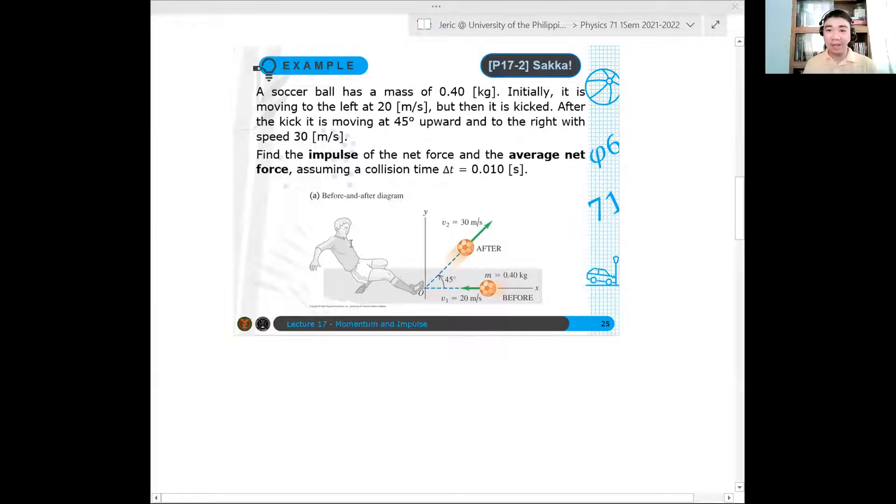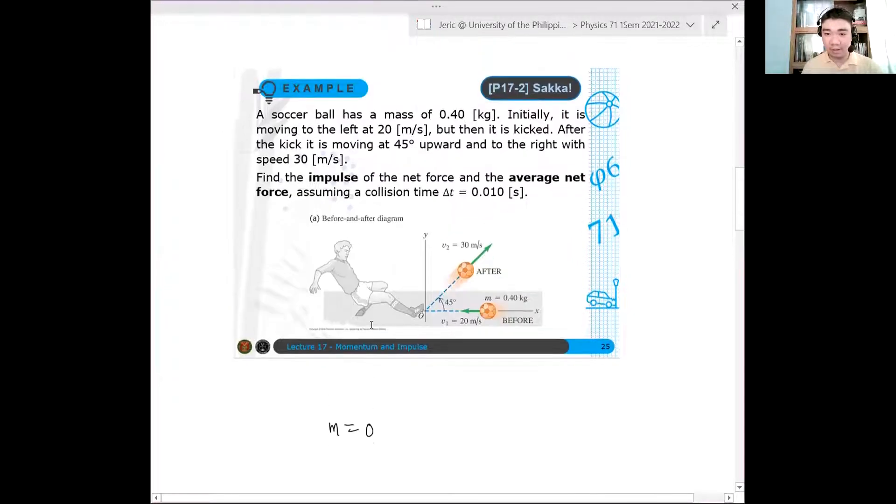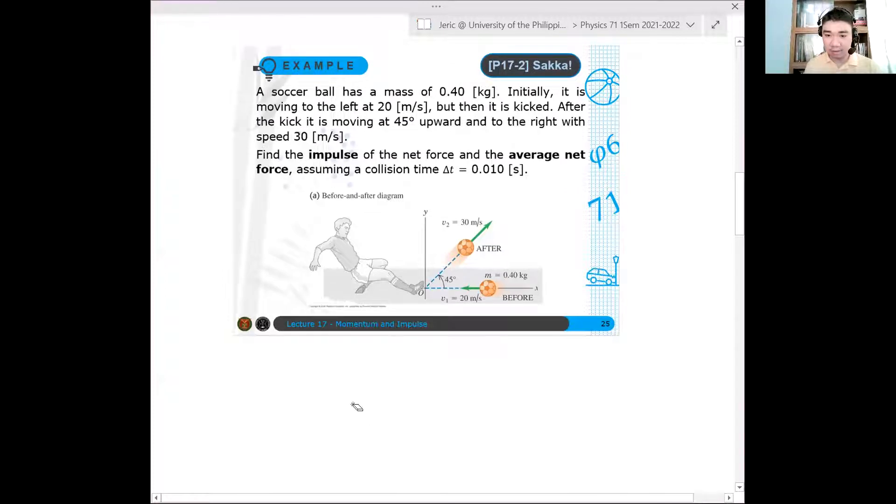Let's solve this problem. So again, you have a soccer ball of mass 0.40 kilograms. So the mass of the soccer ball is 0.40 kilograms. And then it is moving to the left. Initial velocity is 20 meters per second.